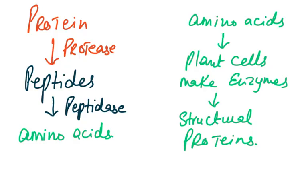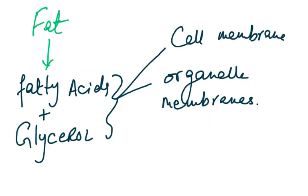Protein in the seed — for example dal (lentils) is very rich in protein — will be converted to peptides by the enzyme protease, and then peptidase converts peptides to amino acids. Amino acids are needed by the growing plant because the root, shoot, and leaves are all growing. The plant cells need amino acids to make enzymes and structural proteins, just as we need carbohydrates, fats, and proteins in our diet.